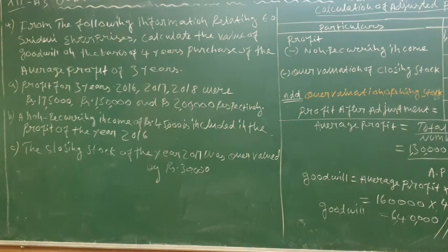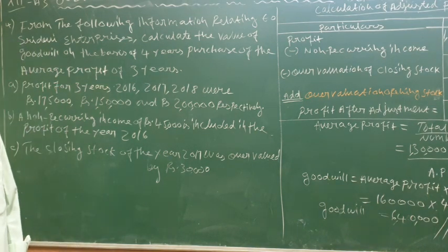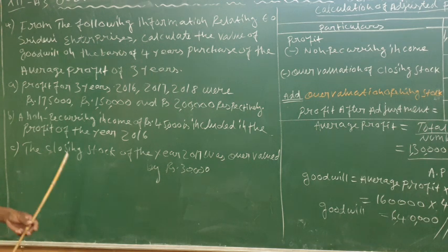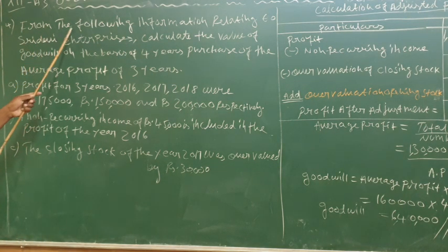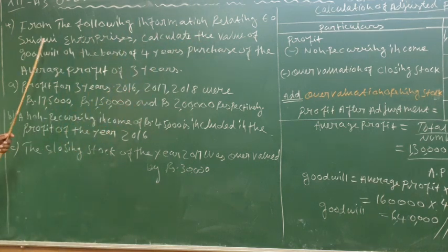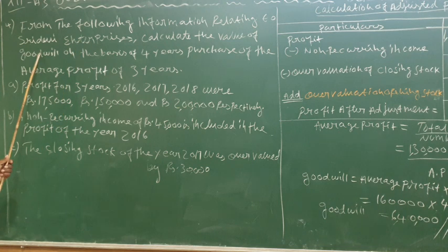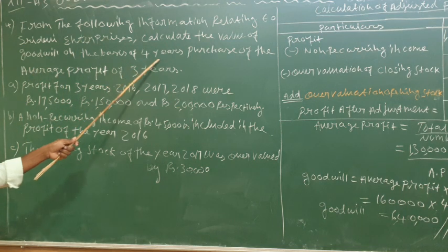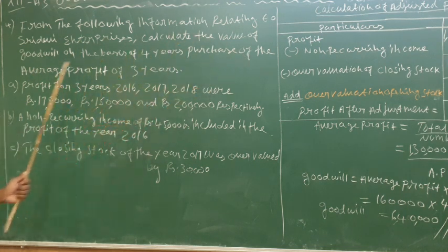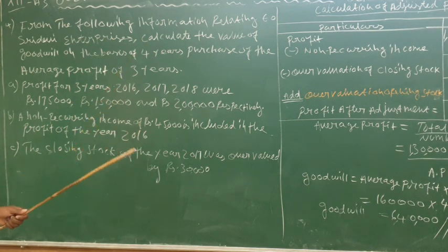Now, let's look at the 4th unit. From the following information relating to Sridevi Enterprise, calculate the value of goodwill on the basis of 4-year purchase of the average profit of 3 years.